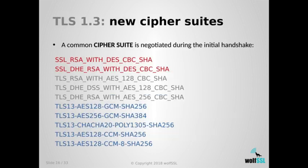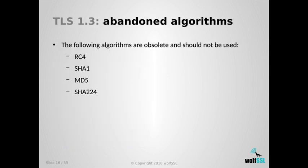In TLS 1.3, cipher suite negotiation works a little differently than in TLS 1.2. Most importantly, new sets of algorithms and cipher suites are being added, thanks to the introduction of new stream ciphers and verification mechanisms. Some algorithms are no longer advised — especially SHA-1 and MD5 — because they've been proven prone to collision attacks and are no longer cryptographically safe. These have been deprecated and removed from the TLS specification.